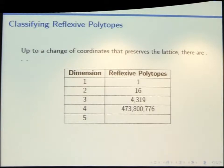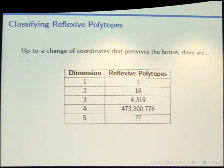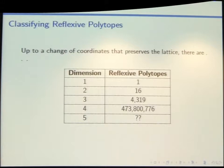If you really want to look at all 473 million reflexive polytopes, you can install that package and play with them. Five dimensions and above is an open problem. There are some special classes of reflexive polytopes that have been classified in much higher dimensions, like all the smooth Fanos, which I think are not yet in SAGE. But the general problem is maybe just too much of a combinatorial explosion to actually hope for a full classification.